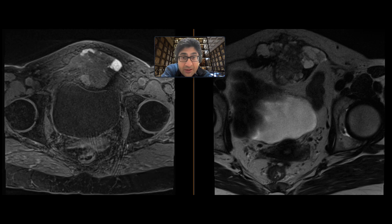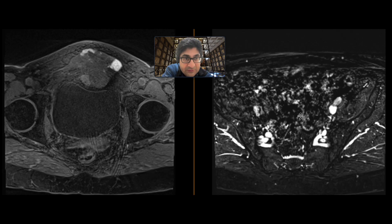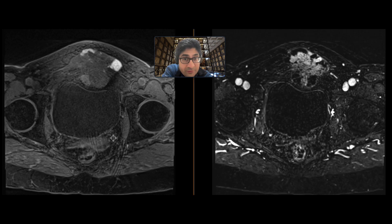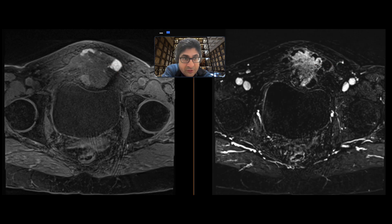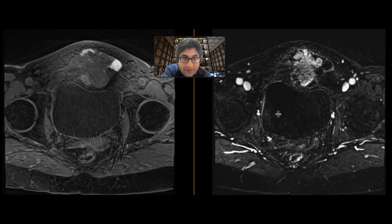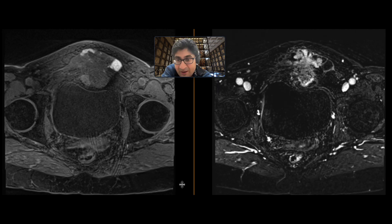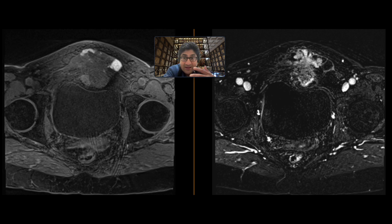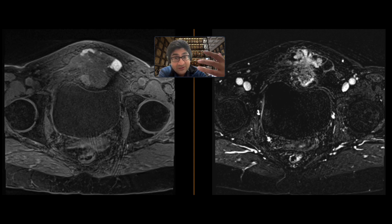Let's look at the post-contrast subtraction images to sort of remove that T1 signal. Whereas some of those areas that contain hemorrhage certainly don't enhance, we can see that a lot of those soft tissue components enhance quite avidly. So here you have this mass within the anterior abdominal wall with soft tissue components that enhance, with components that may be cystic, and components that contain hemorrhage.